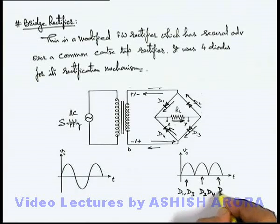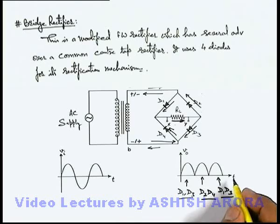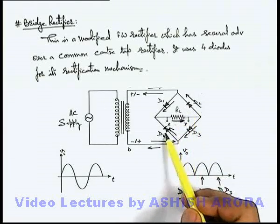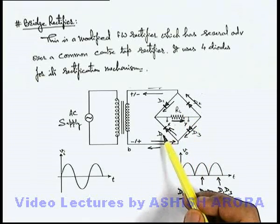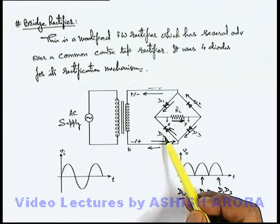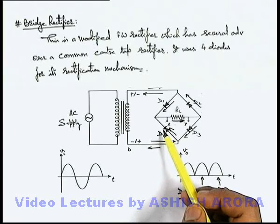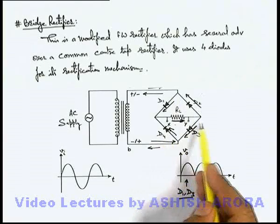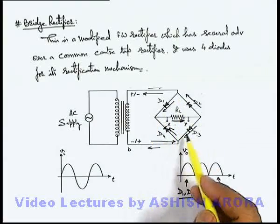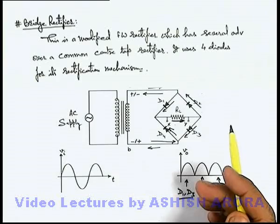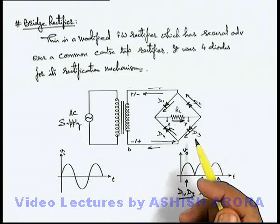At every stage, 2 diodes are active in series, so the current capacity of the diodes will increase. In a normal center tap rectifier, at a time only 1 diode is forward biased, so its current capacity must be high. Since 2 diodes — either D1 and D3, or D4 and D2 — are in series at a time, the current capacity of a bridge rectifier is significantly more than a normal center tap rectifier.